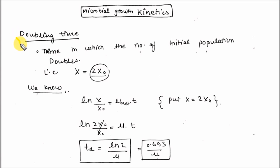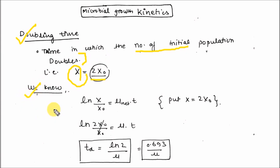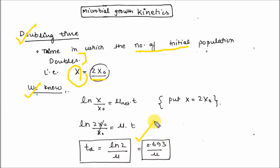What is the doubling time? The doubling time is the time in which the initial population doubles. That means x = 2x₀. Just put this value into the equation from microbial growth kinetics. You will get ln(2), and manipulating this equation for t gives doubling time = ln(2)/mu = 0.693/mu.